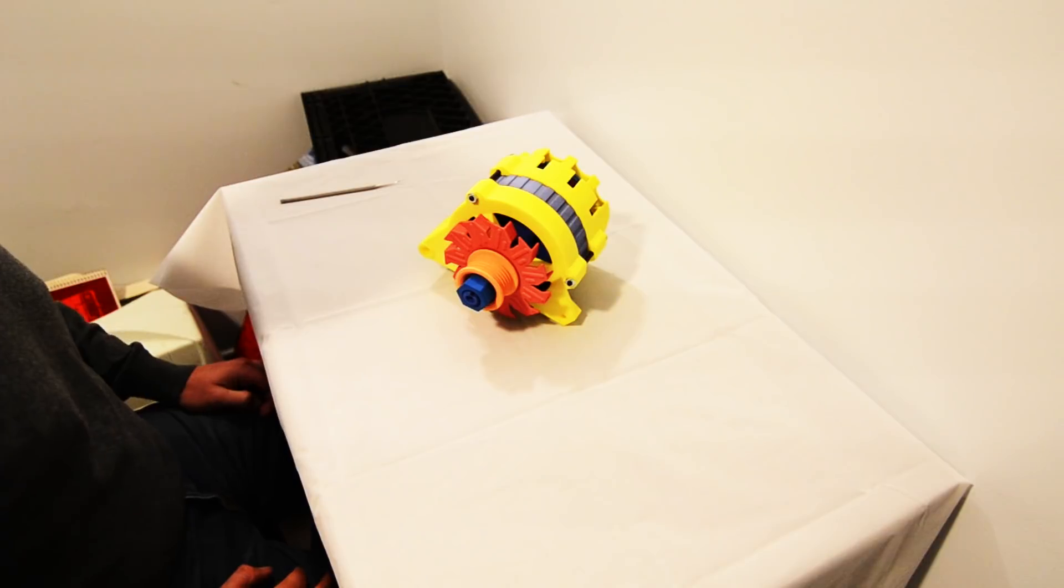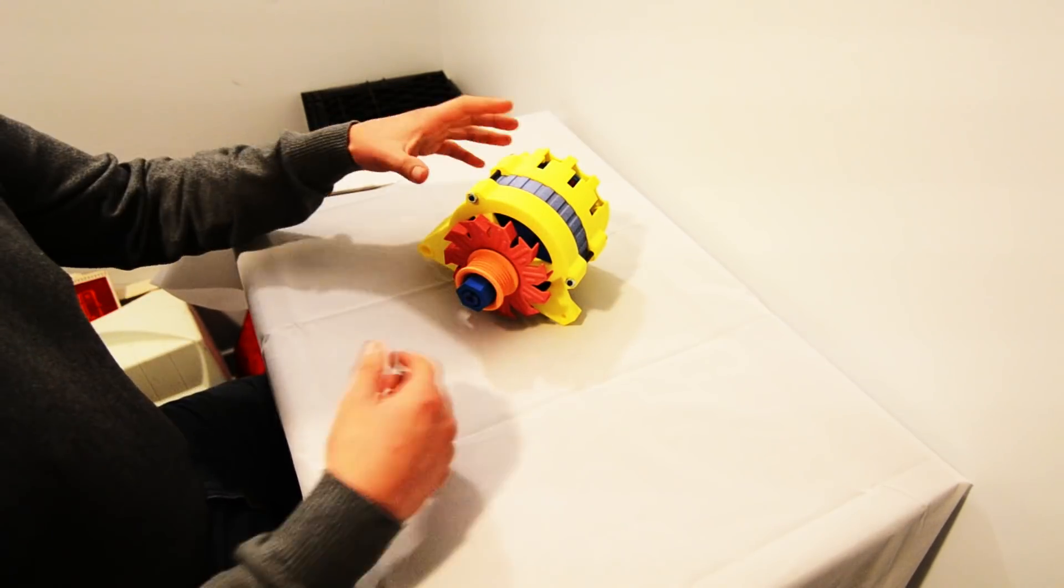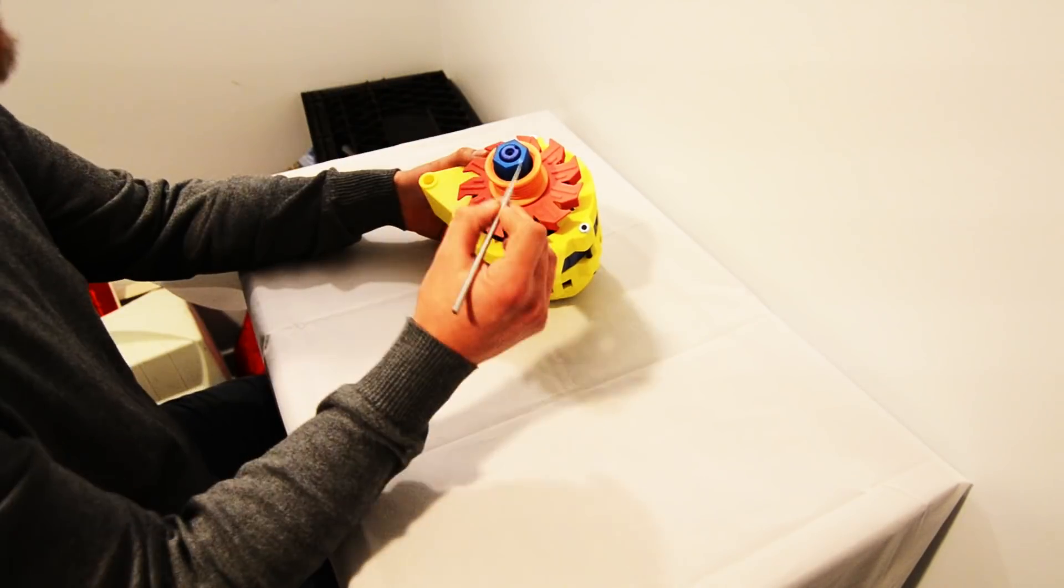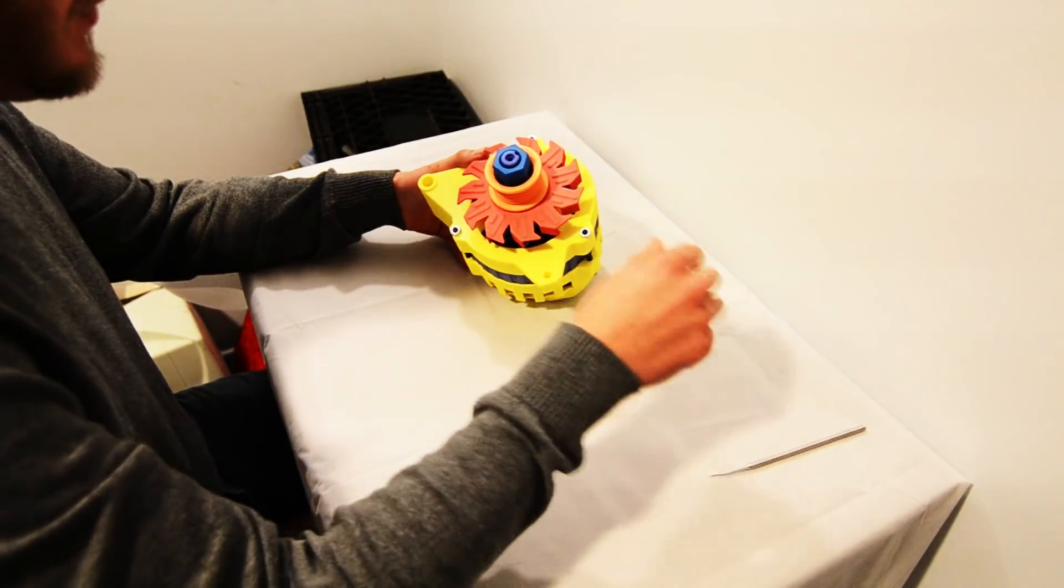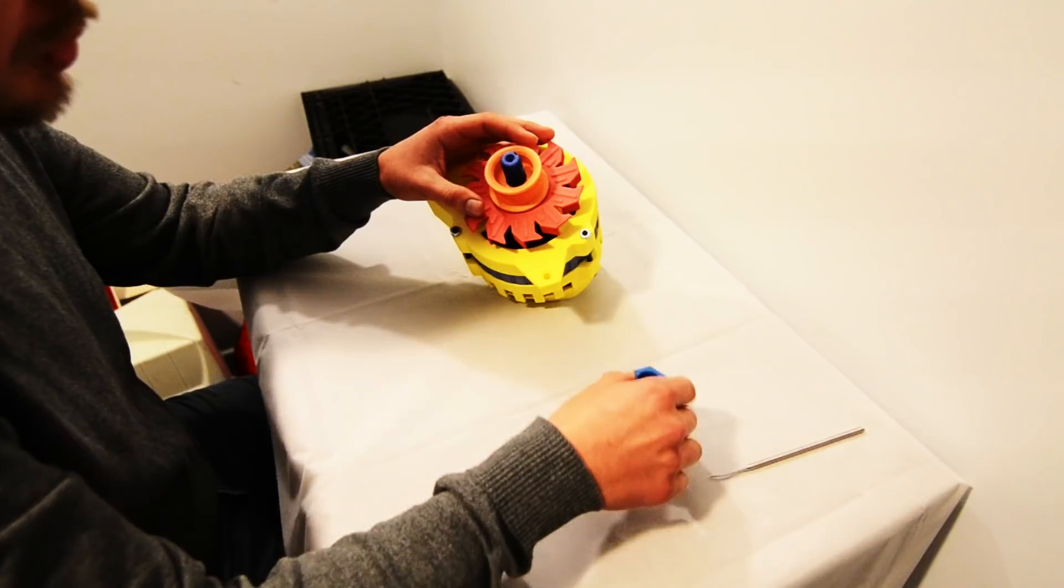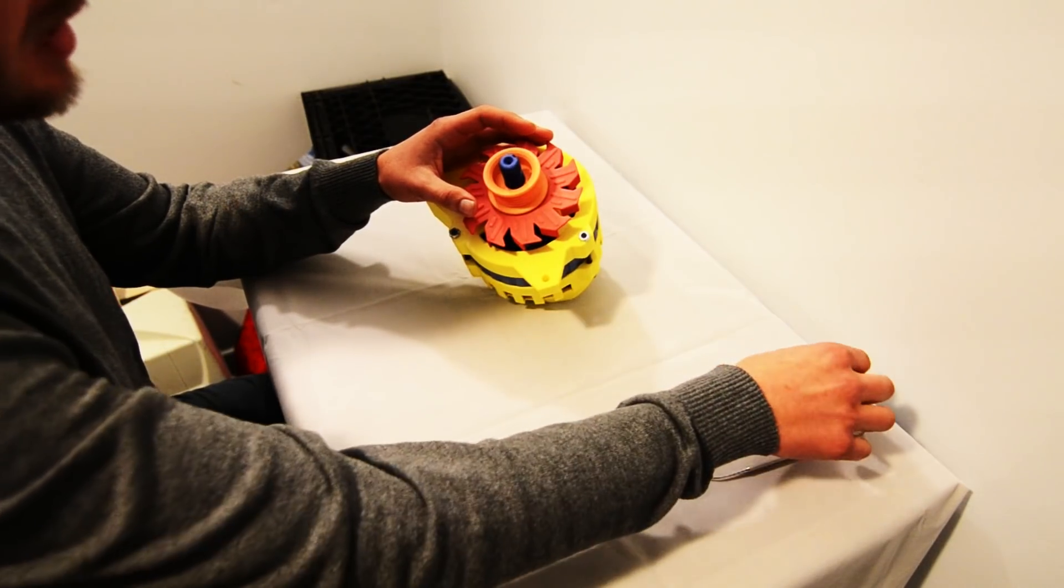Alright guys, you've made it over. So let's get started on this alternator. The first step is we've got these external components that we need to get off. We've got the nut, pulley and fan. So let's go ahead first and pull off the nut. This is a quarter turn design that holds the external accessories on. So with a quick quarter turn, the nut comes off.